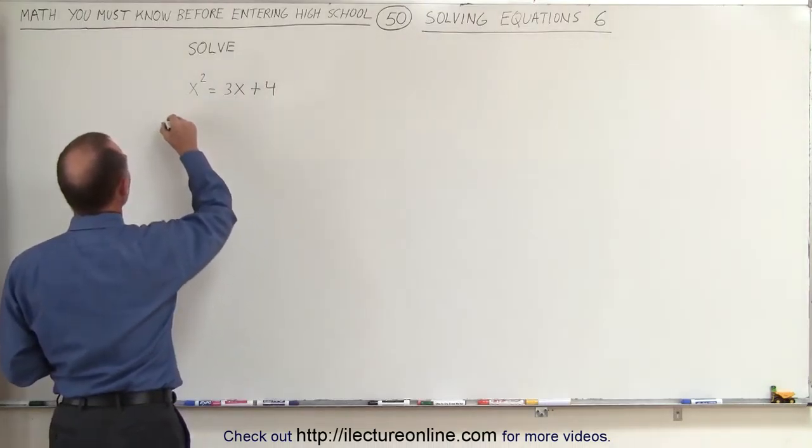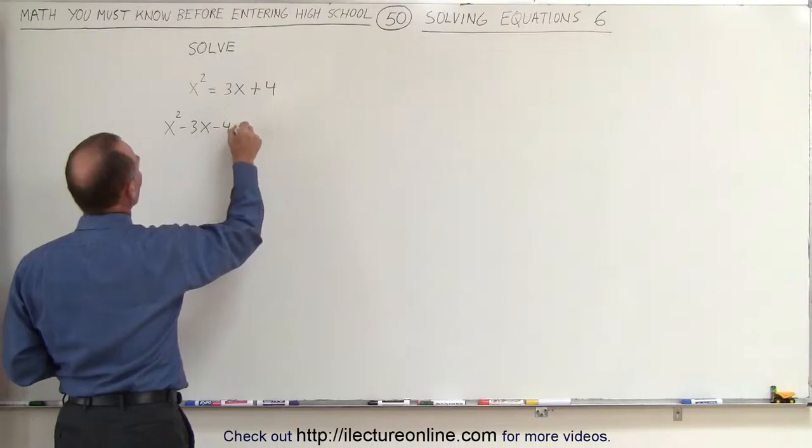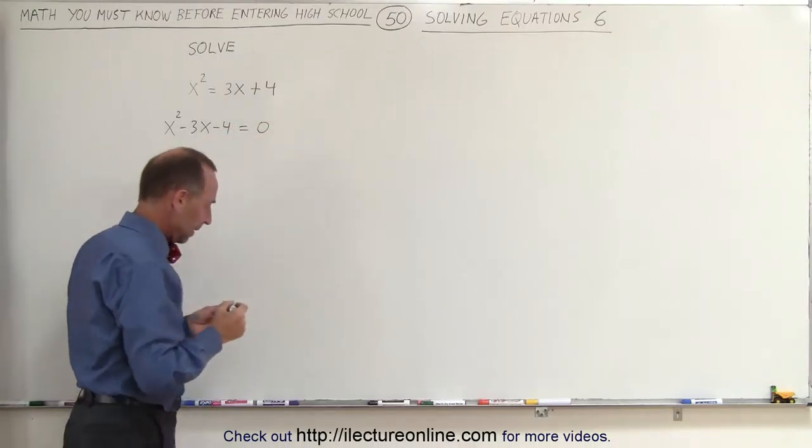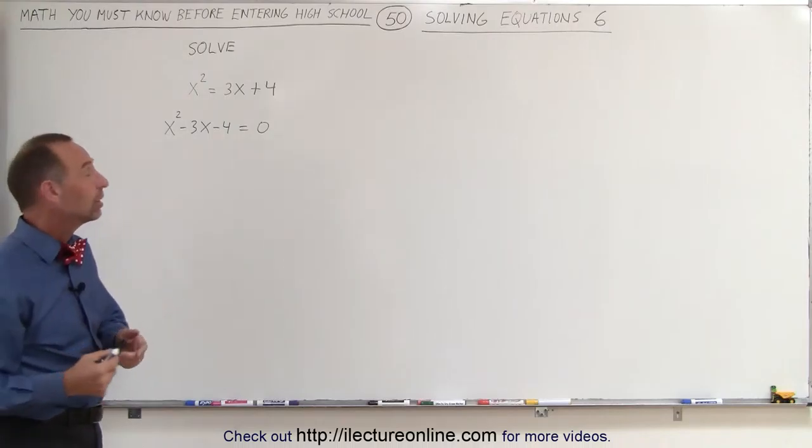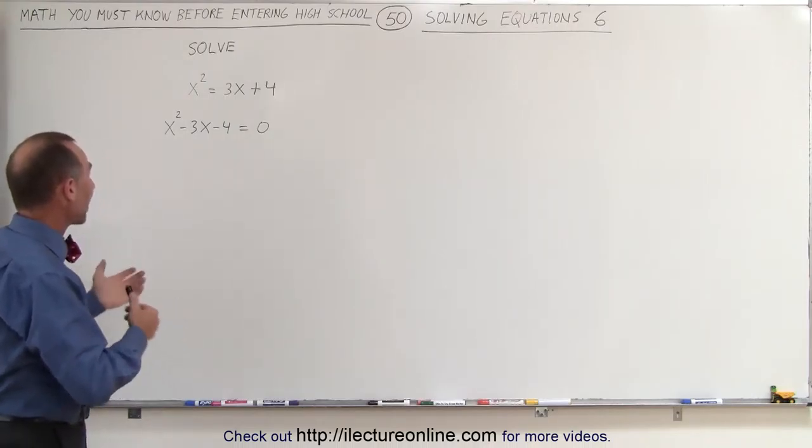So in this case, we'll end up with x² - 3x - 4 = 0. Now, this looks like something we may be able to factor. Let's give it a try. It shouldn't take us too long to figure out if it's factorable or not.